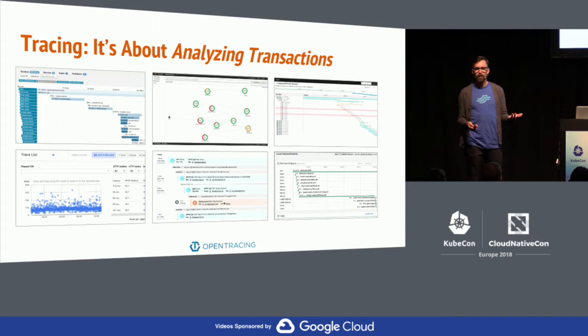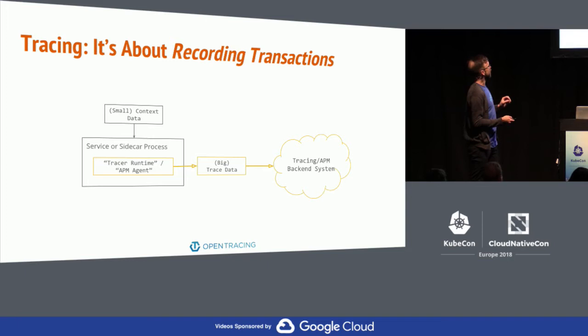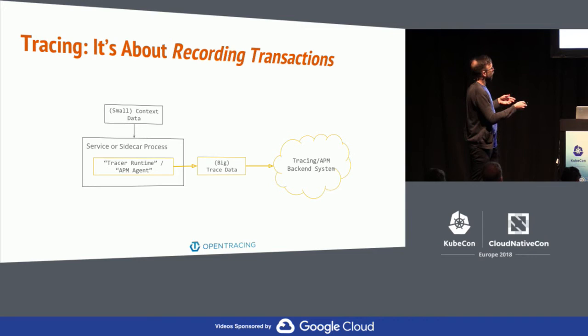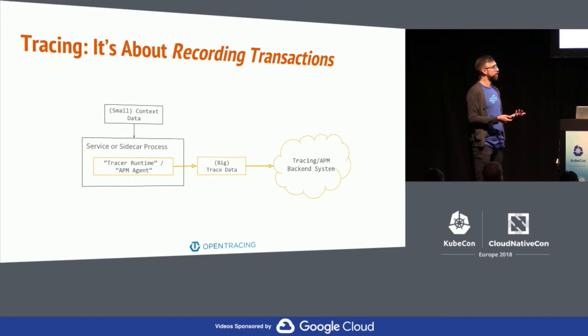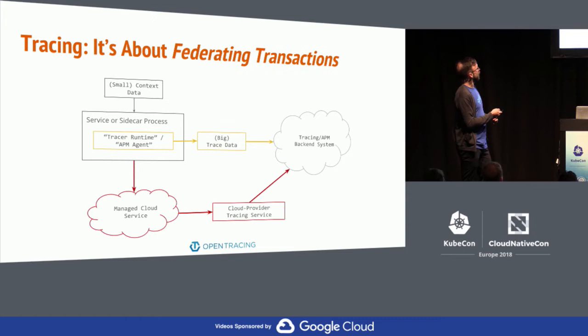Tracing is also about recording transactions. Some kind of runtime sitting in a microservice or sidecar like Envoy or Linkerd takes data, records it, and sends it out of the process to a backend system. You're thinking from the perspective of someone who needs to get this data into a central place — either your own company's ELK stack, some kind of database, or maybe you're developing an open source tracing system. So tracing as recording transactions is a completely valid but completely different interpretation.